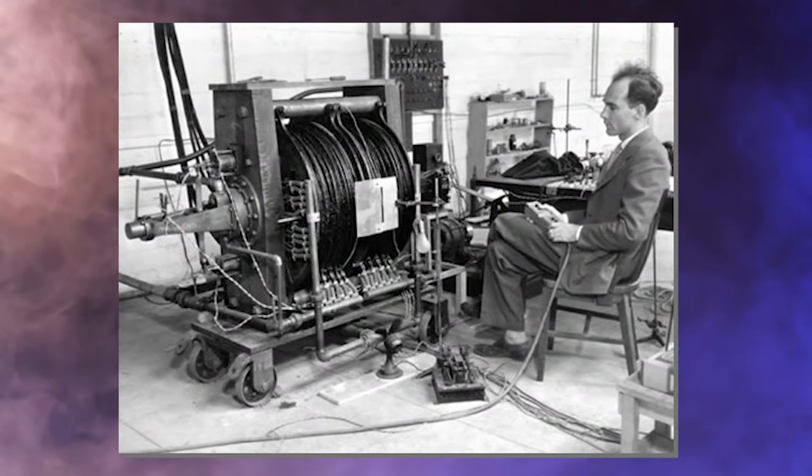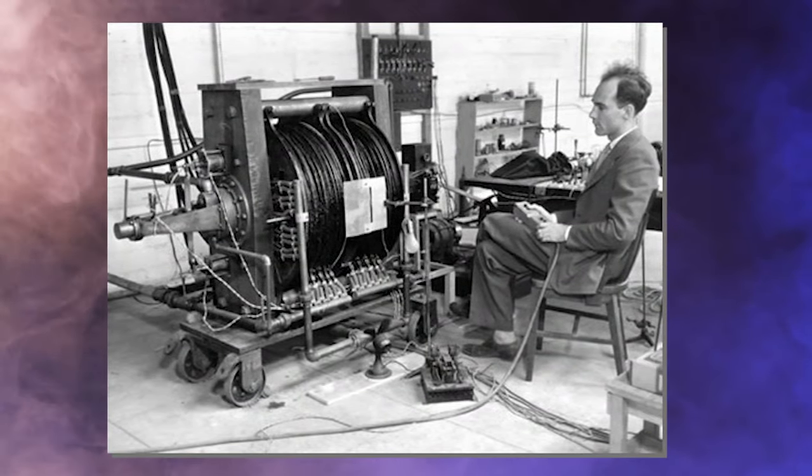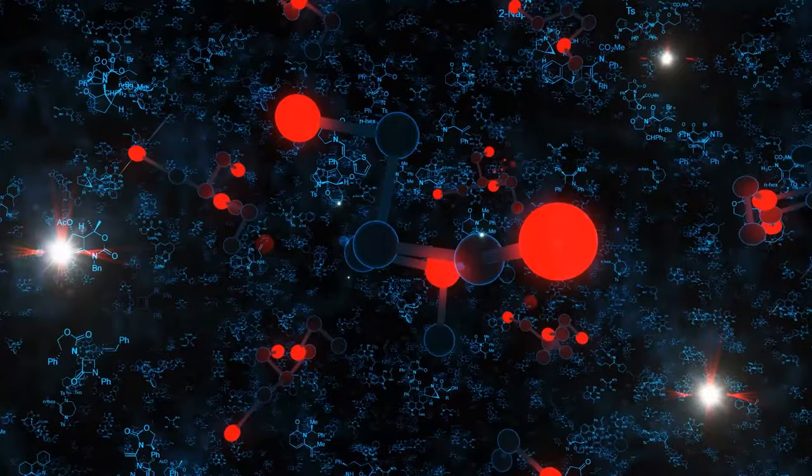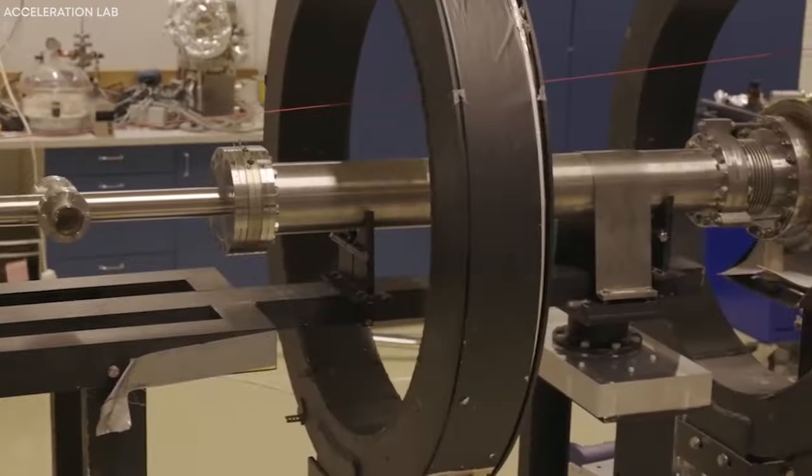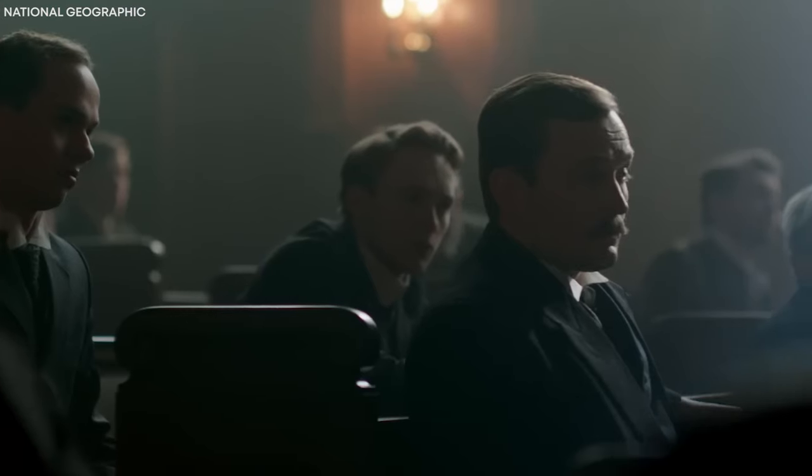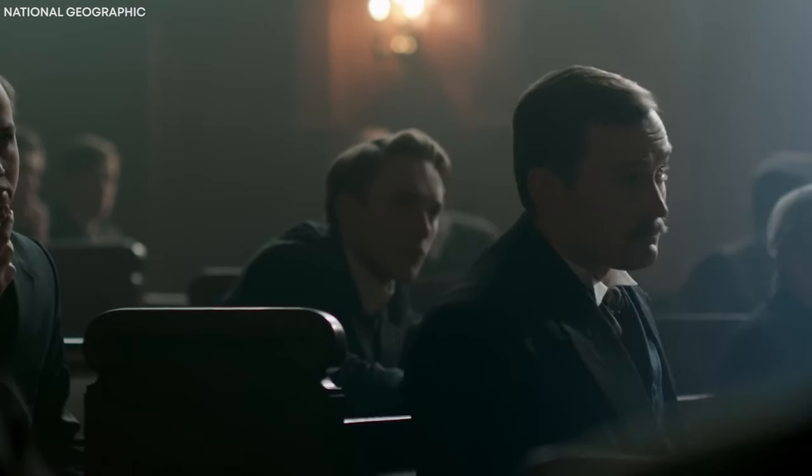Anderson's discovery of the positron led to a flurry of research in particle physics. It soon became evident that for every known particle, a corresponding antiparticle with an opposite charge but the same mass existed. Following the discovery of the positron, scientists began searching for other antiparticles.